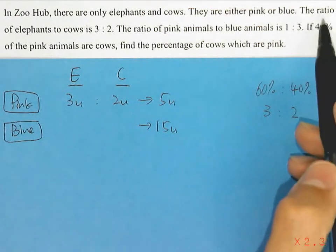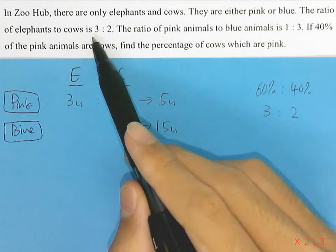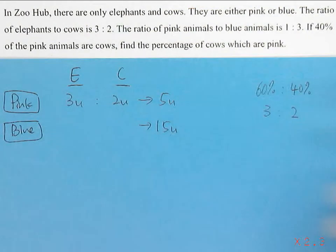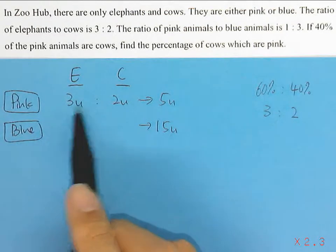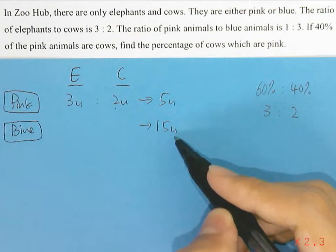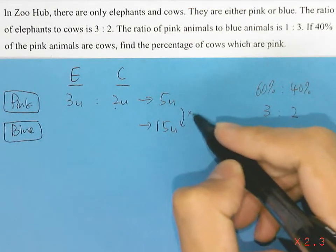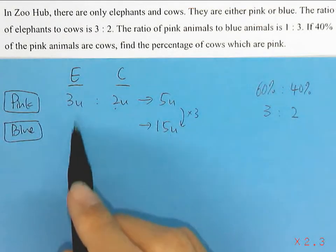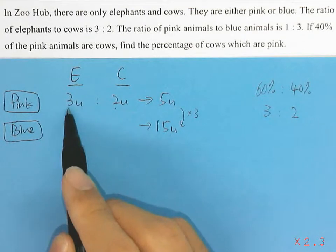Next, we know that the ratio of elephants to cows is 3 to 2. We already have 3 to 2 here. Since the total number of blue animals is 15 units, this is actually multiplied by 3, so we do the same for this ratio.